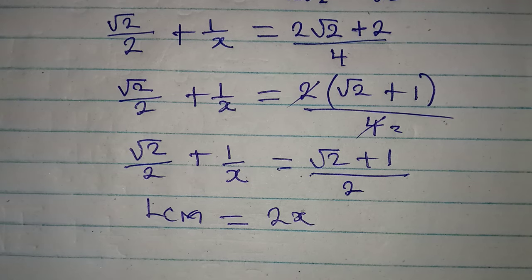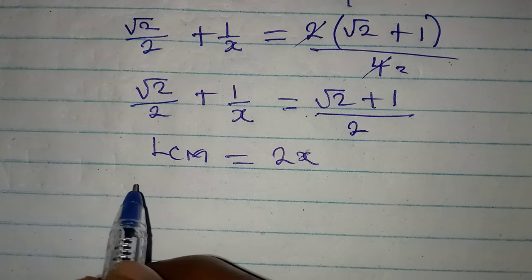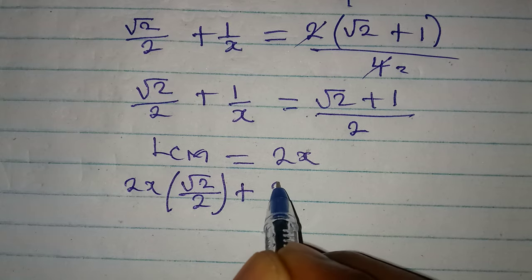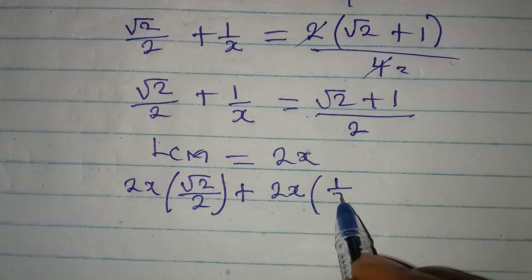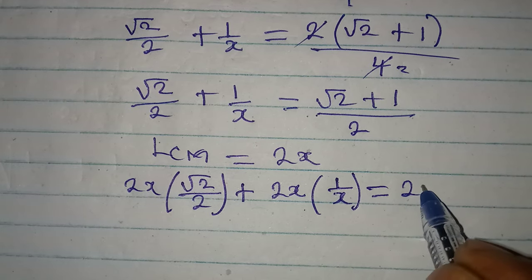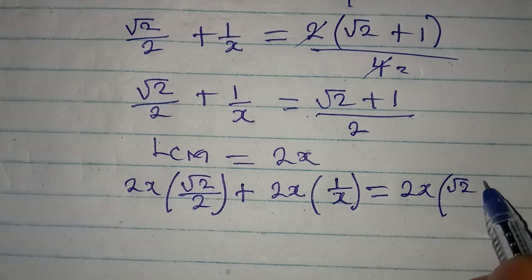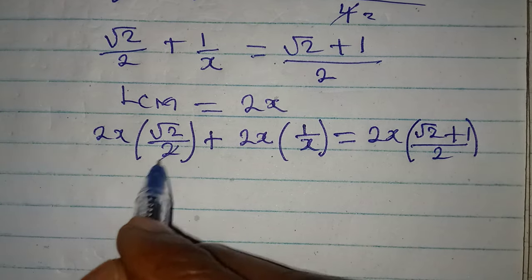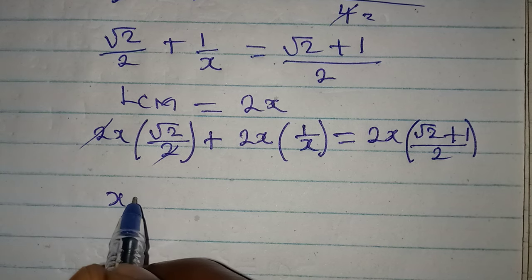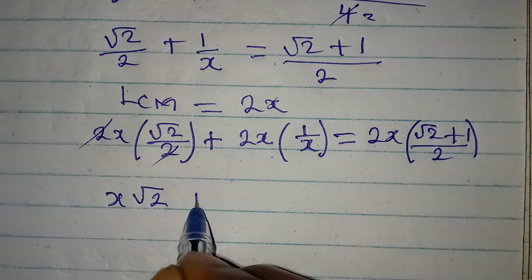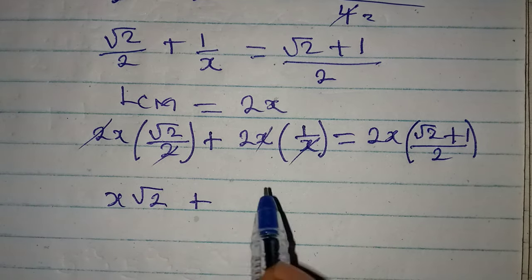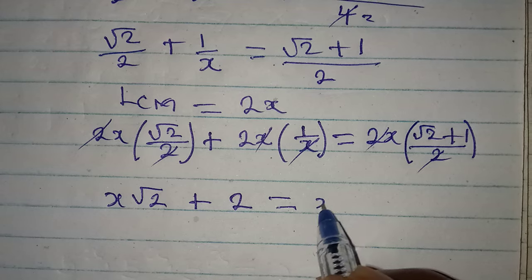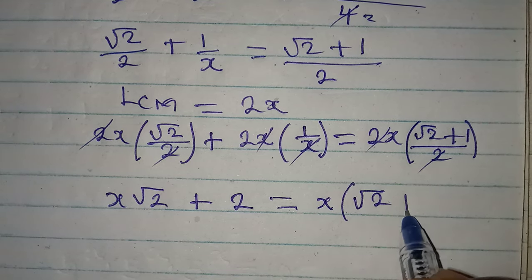Now multiply everything by 2x: 2x multiplied by root 2 over 2, plus 2x multiplied by 1 over x, equals 2x multiplied by root 2 plus 1 over 2. From here, 2 cancels giving us x root 2, then x cancels giving us 2 times 1 which is 2, and on the right 2 cancels giving us x times root 2 plus 1.